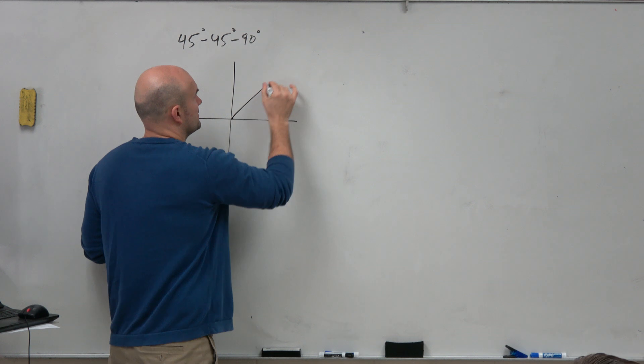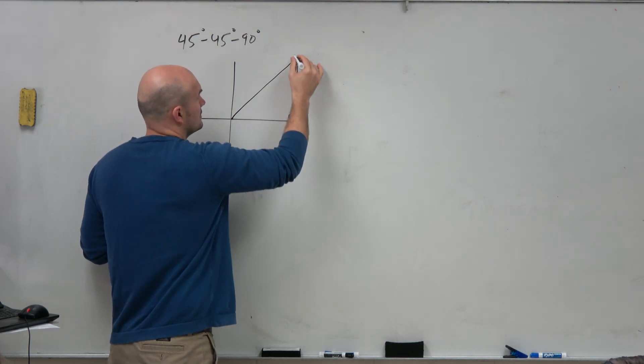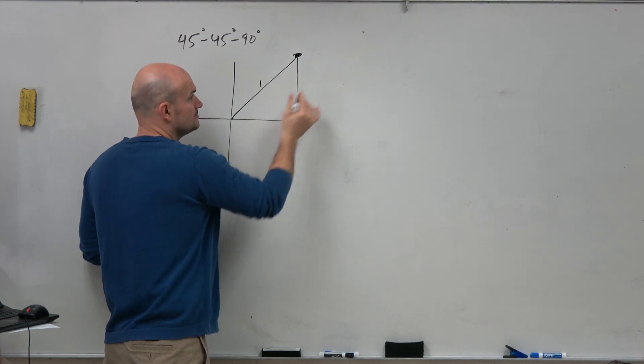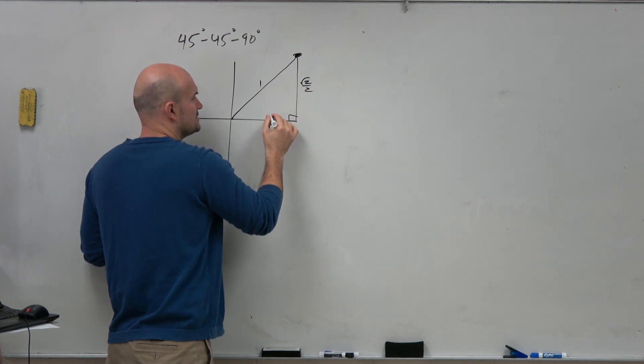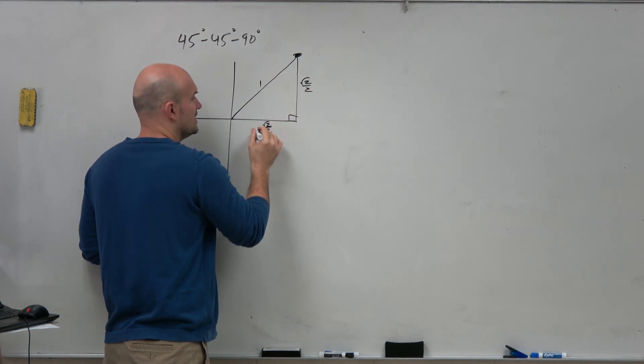So let's go ahead and draw this on the coordinate grid. That's 1, square root of 2 over 2, and this is going to be square root of 2 over 2.